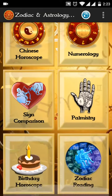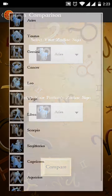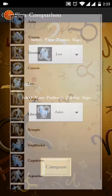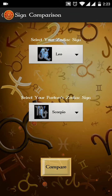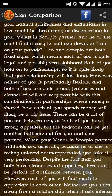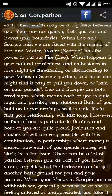Next feature is sign comparison, wherein you have to select your sign — which is Leo — and your partner's sign, let's say Scorpio. Then you can compare your horoscope with your partner's horoscope and see how compatible you are in terms of love and relationship. Just go through it — it will help you a lot. Same way, we have Facebook, WhatsApp, and Gmail share features.